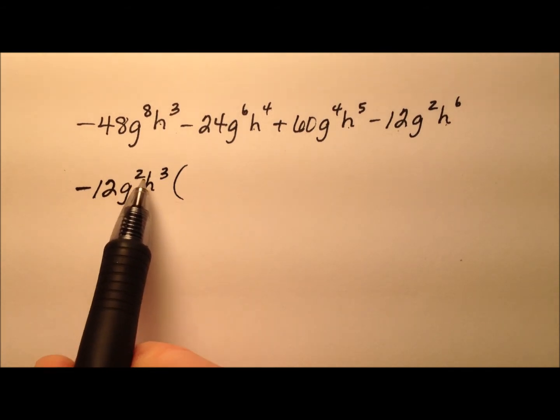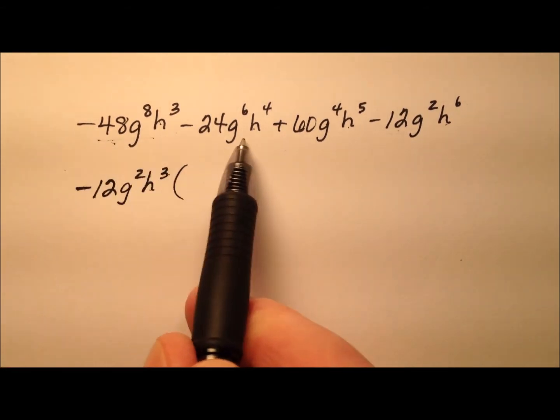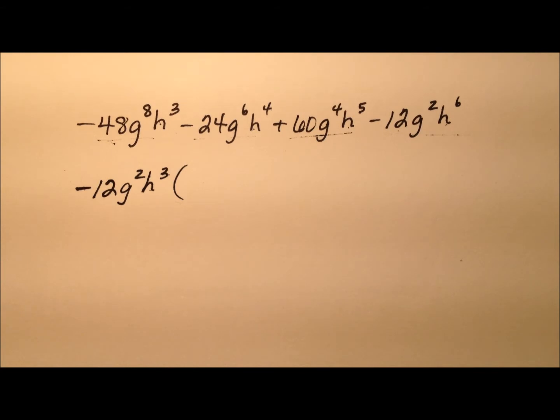So negative 12 g squared h cubed will be the greatest common factor of all four of these terms.